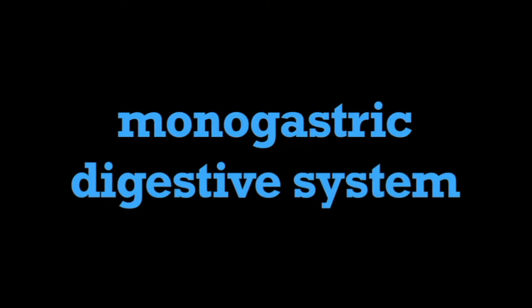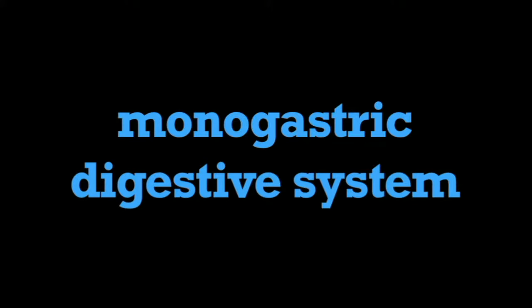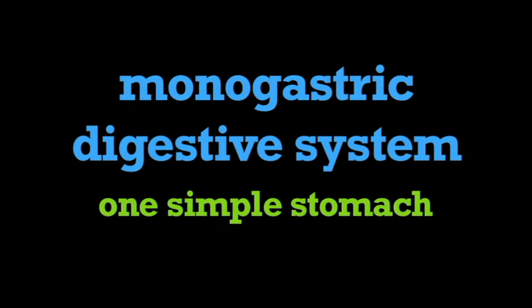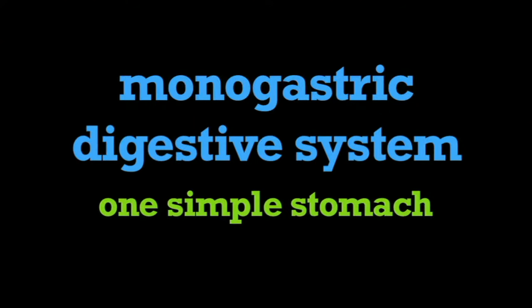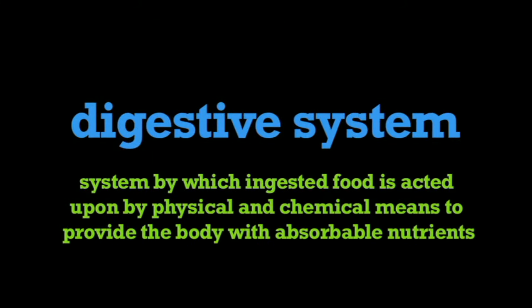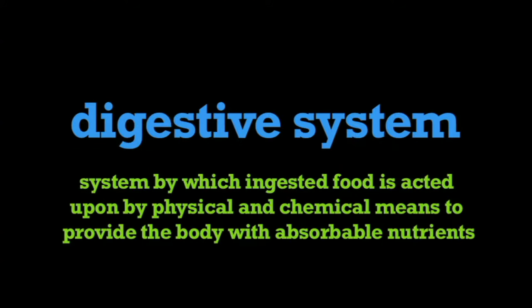In this program, we're going to learn about the monogastric digestive system. Animals with a monogastric digestive system have one simple stomach. A digestive system is the system by which ingested food is acted upon by physical and chemical means to provide the body with absorbable nutrients.